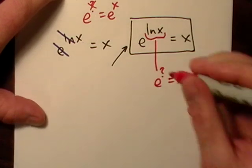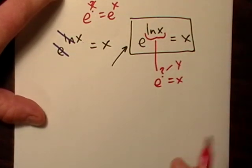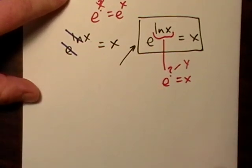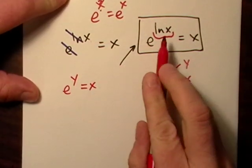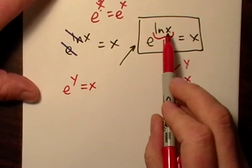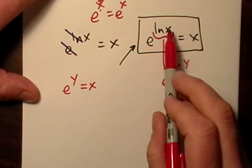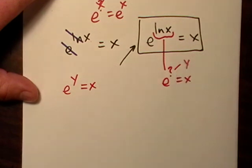Okay, well let's just call that what? We'll just call it y. Okay, so let's just rewrite this. E to the y equals x, because we don't know what it is. It's e to the something, you know, e to the something equals x, so we'll just call it e to the y equals x.